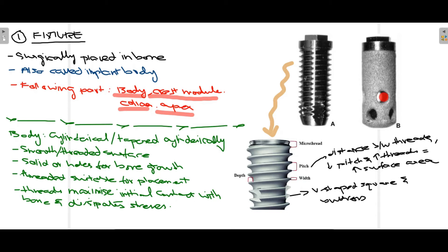The threaded structure is more suitable for implant placement. The threads present in the fixture help to maximize initial contact with the bone and help to dissipate stresses placed occlusally. If you magnify the fixture, a detailed structure can be seen.